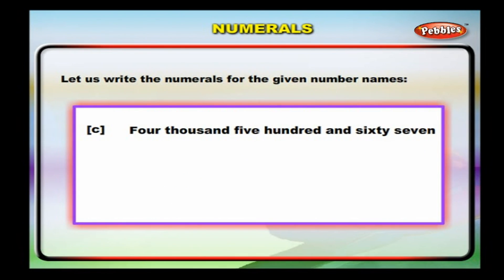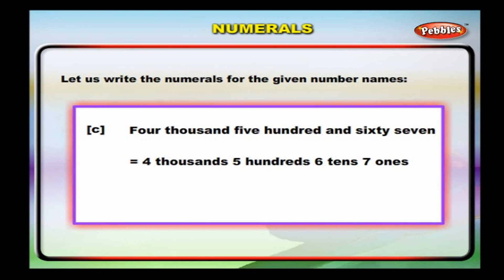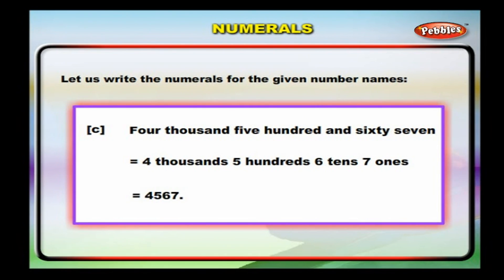Four thousand, five hundred and sixty-seven. We have four thousands, five hundreds, six tens and seven ones. We write this as 4, 5, 6, 7.